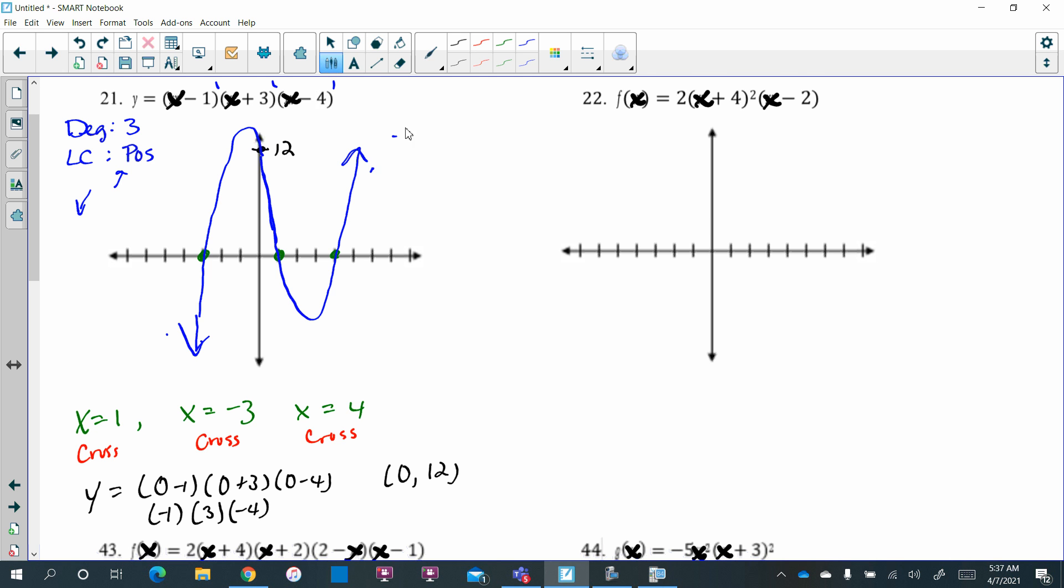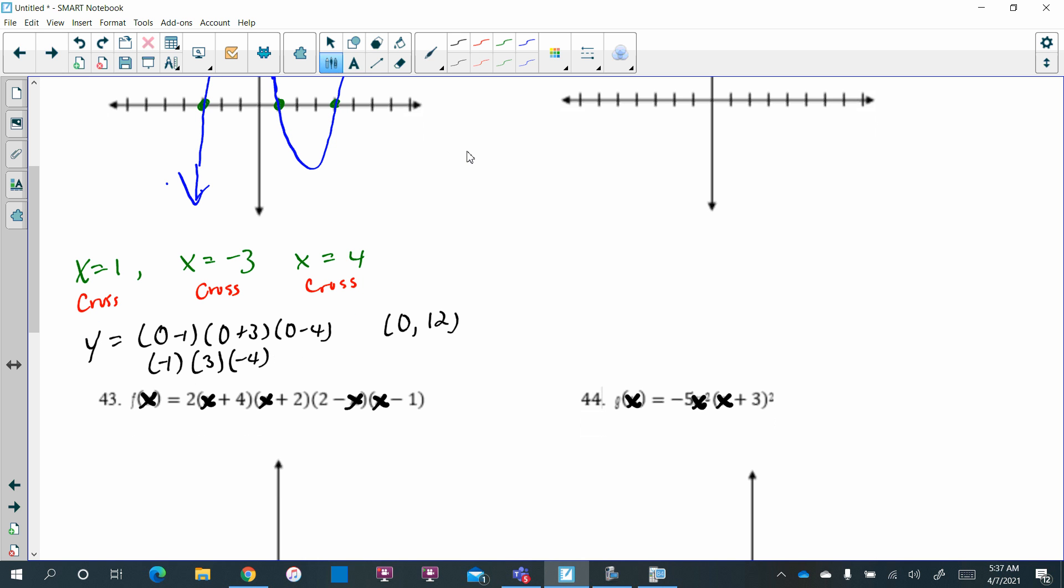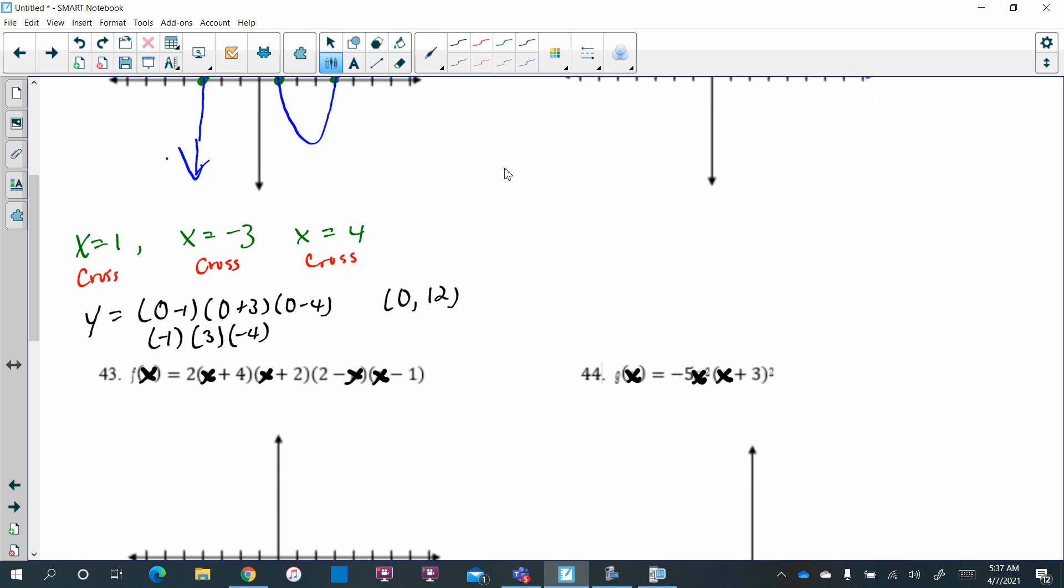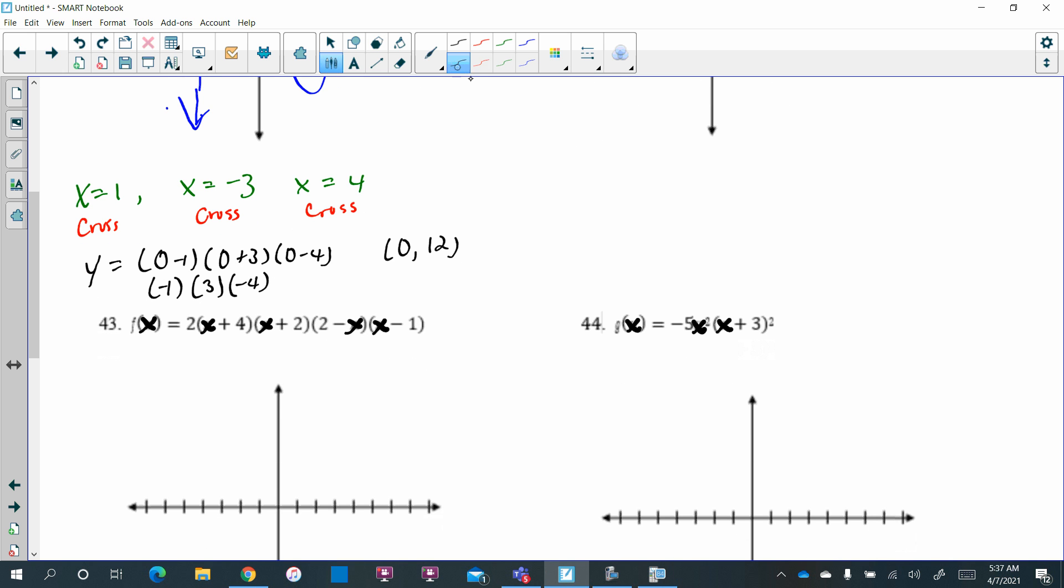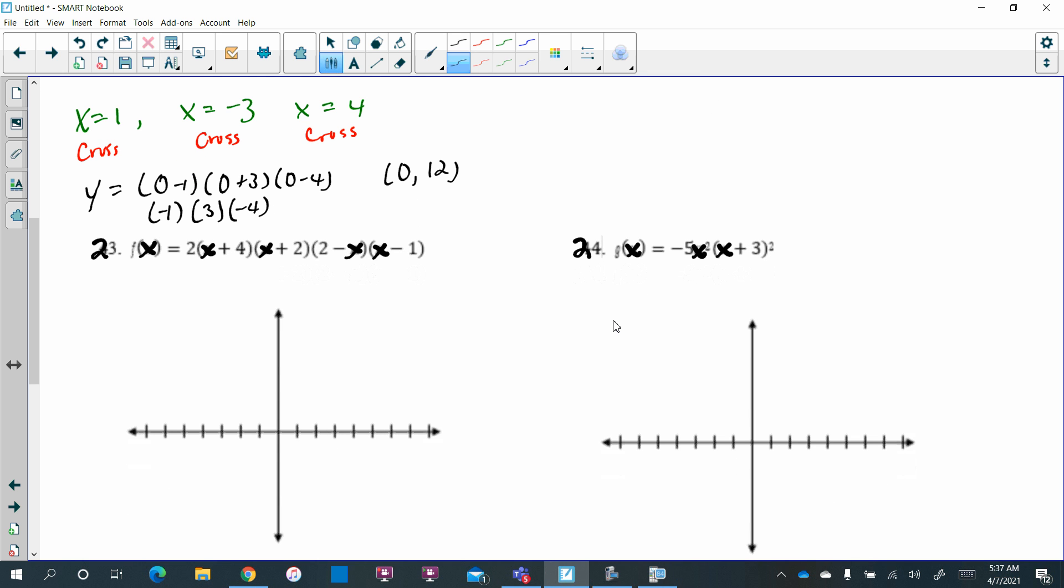Now, I do want to talk about, I don't know why this is 43. Did I number it wrong too? Did I miss something? Yep, I did. I'm sorry about that. It should have been 23, right? So it should be 23 and then 24. I don't know how that happened. So let's talk about 23 real quick. Because I want you to pay attention when this happens.